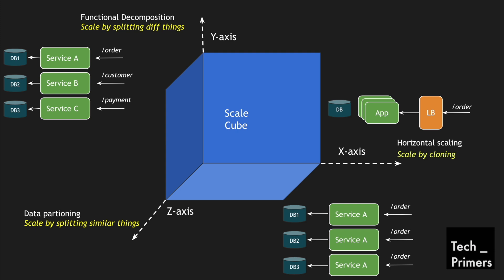The scale cube defines all three different approaches for scaling applications. You can choose both x-axis and y-axis, or y-axis and z-axis, or even a combination of all three — x-axis, y-axis, and z-axis. That's why it uses a cube rather than a two-dimensional approach: with a three-dimensional model you can combine different axes and apply different rules when scaling your application.